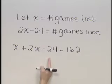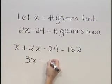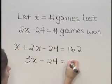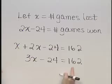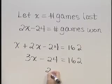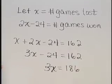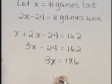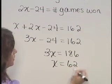Now let's solve this equation for X. Combining like terms gives 3X minus 24 is equal to 162. Add 24 to both sides, giving 3X is equal to 186. And divide both sides by 3 to get X is equal to 62.